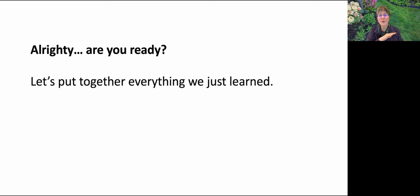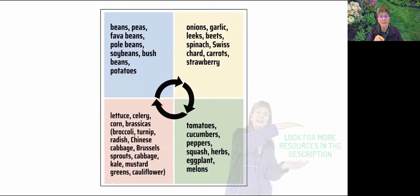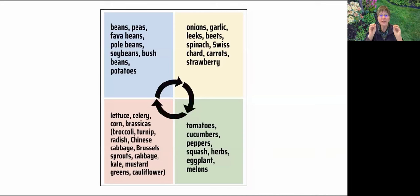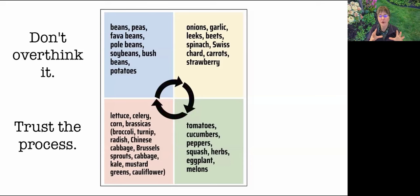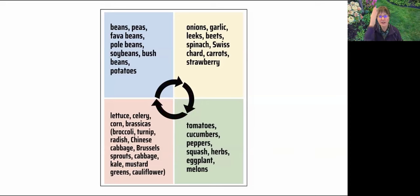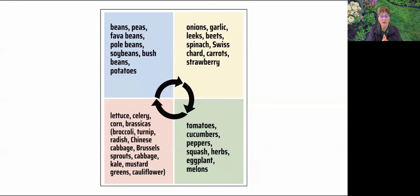Are you ready? We're going to put this all together. Here's a crop rotation chart divided into four quadrants or groups. It might look a little overwhelming at first glance, but remember: when it comes to rotating your crops, there are no hard and fast rules. The most important thing is to do something — to rotate your crops. It doesn't have to be perfect or exactly sequential. The list of plants in each square takes into account two things: the plant families and the plants' nutritional needs.